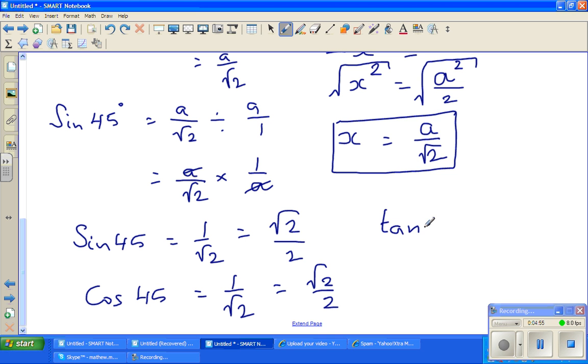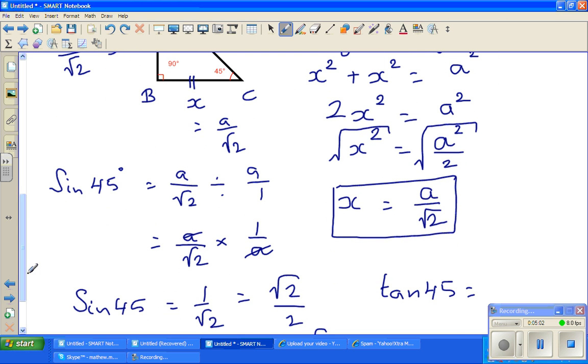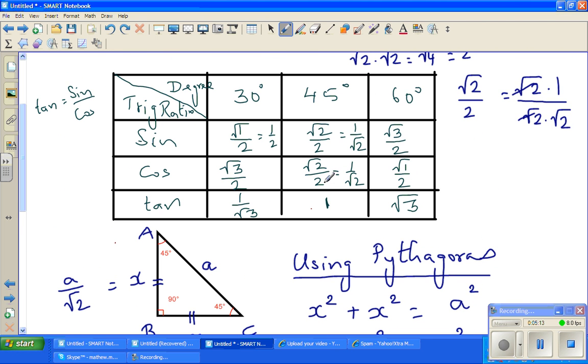And tan 45 is opposite over adjacent. So opposite and adjacent are equal, so you can say that it's A over root 2 divided by A over root 2. And they are the same, so that is 1. And that's why tan 45 is 1.